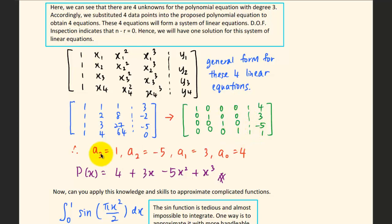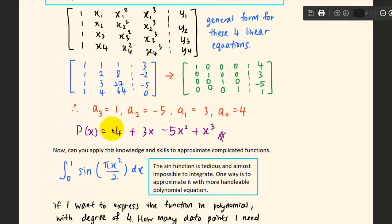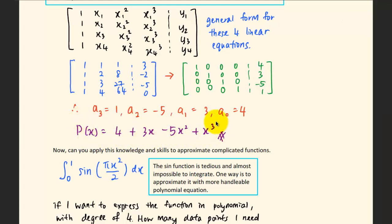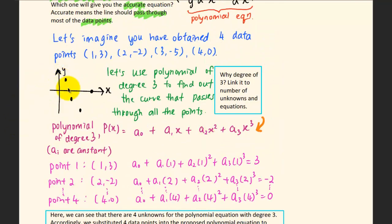The last step is to substitute the values of the unknowns A₀ through A₃ back into the polynomial equation, giving P(x) = 4 + 3x - 5x² + x³. This is the polynomial equation that passes through all the experimental data points.